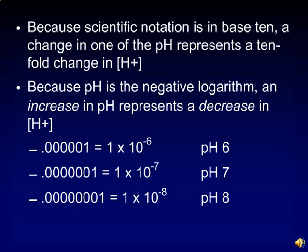Second, since pH is the negative logarithm, an increase in pH represents a decrease in hydrogen ion concentration. For example, a hydrogen ion concentration of 1 times 10 to the minus 6th is a pH of 6. If we decrease the hydrogen ion concentration tenfold to 1 times 10 to the minus 7th, the pH increases by 1 to 7. As we continue to decrease the hydrogen ion concentration, the pH continues to go up.